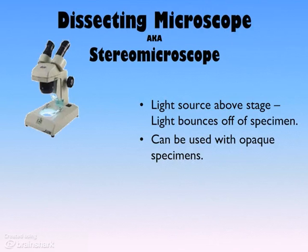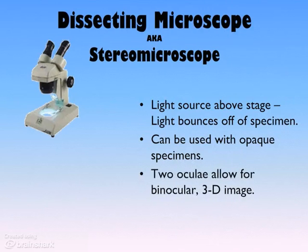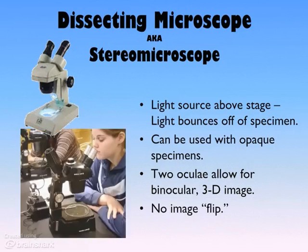And not have to worry about light transmittance. The two oculae allow for the 3D binocular image to be seen, so you can see depth. And there's no image flip, so that makes these perfect for in-class dissections.